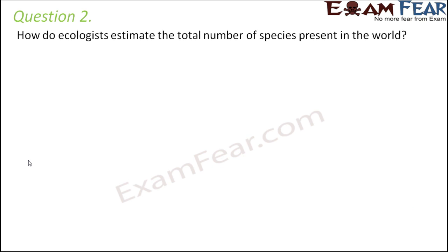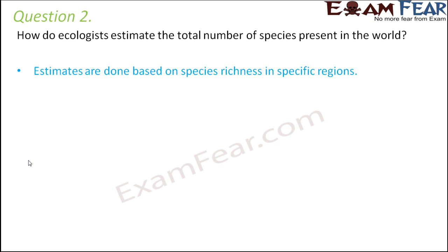Question number two: how do ecologists estimate the total number of species present in the world? It is a very tedious task for scientists to roam around in search of new species, study them, and then describe them. However, there are certain methods using which they are able to get a rough estimate. These estimates are done based on species richness in specific regions, using the species-area relationship to get a rough estimate.